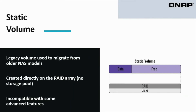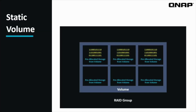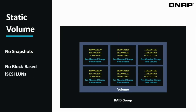A static volume is a legacy volume that is created directly on the RAID group without a storage pool. It is the least flexible and is incompatible with a few advanced features of the QNAP, but if you are migrating from an older NAS that was configured as a static volume, the option is still available. Without storage pools, static volumes allocate all of the data from a RAID group. One implication is that you can't use snapshots on a static volume because snapshots are stored outside of the volume on the storage pool.